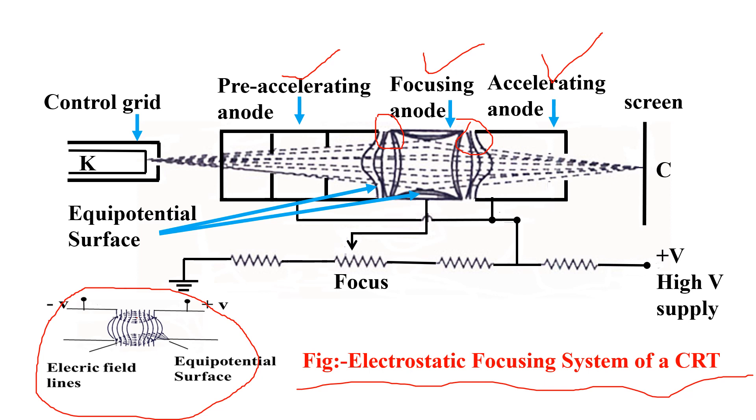A double concave lens is formed here due to the special arrangement of these anodes. As soon as the beam enters the second concave lens, it is converged and focused on the screen at the center of the CRT axis.